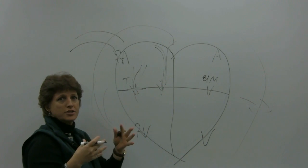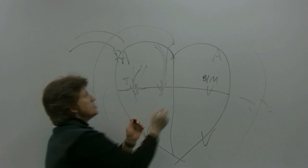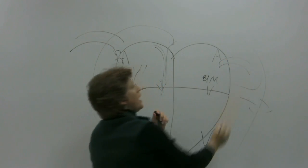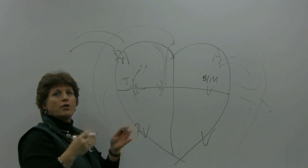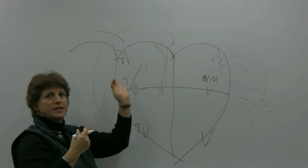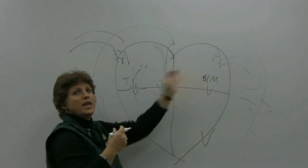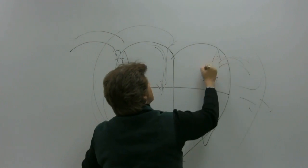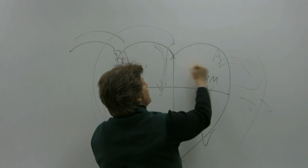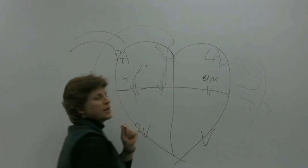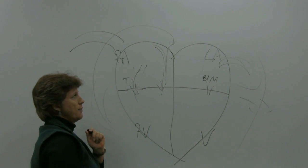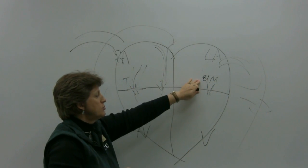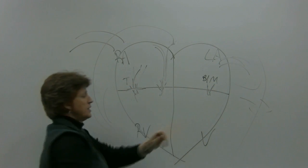The oxygenated blood comes back to the left side of the heart via the pulmonary vein. The pulmonary artery takes blood to the lungs, and the pulmonary vein brings it back to the left side of the heart. It comes back to the left atrium.